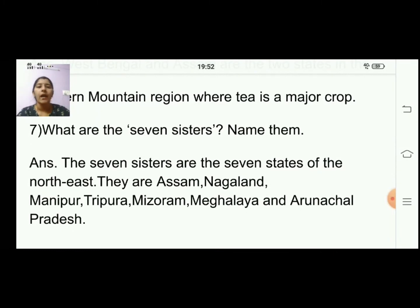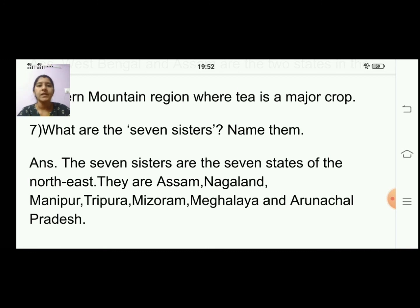Seventh question: what are the seven sisters? Name them. The seven sisters are the seven states of northeast India. They are Assam, Nagaland, Manipur, Tripura, Mizoram, Meghalaya, and Arunachal Pradesh.